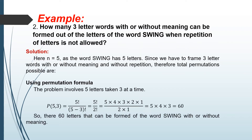Here is the solution. Here, n equals 5 as the word SWING has 5 letters. Since we have to form three-letter words with or without meaning and without repetition, the total permutations possible are found using the permutation formula. The problem involves five letters taken three at a time, so P(5, 3) equals 5 factorial over (5 minus 3) factorial.